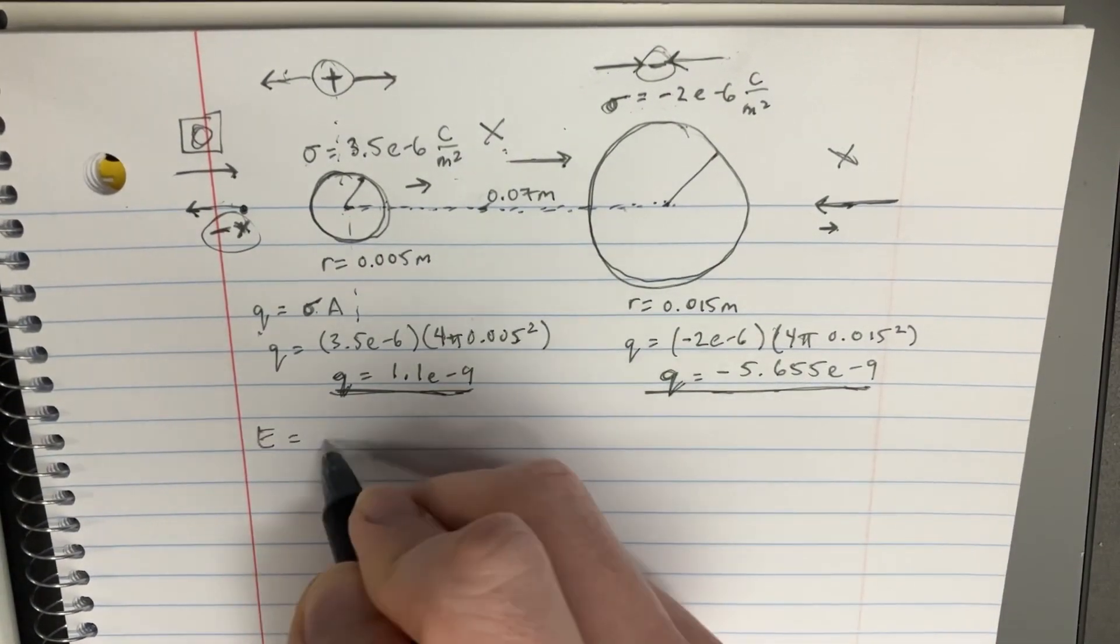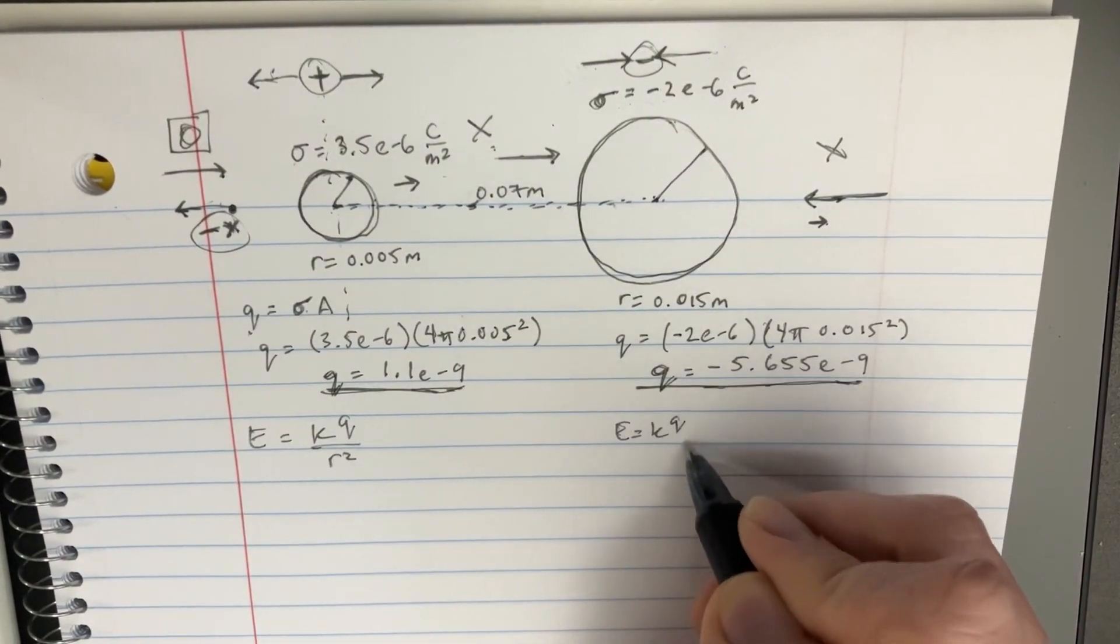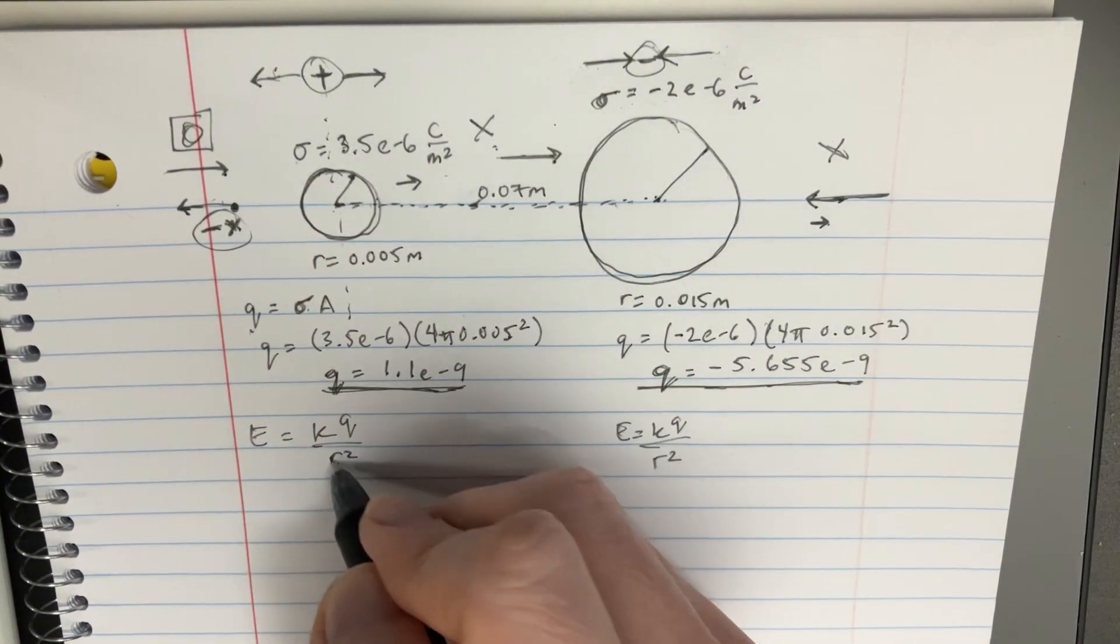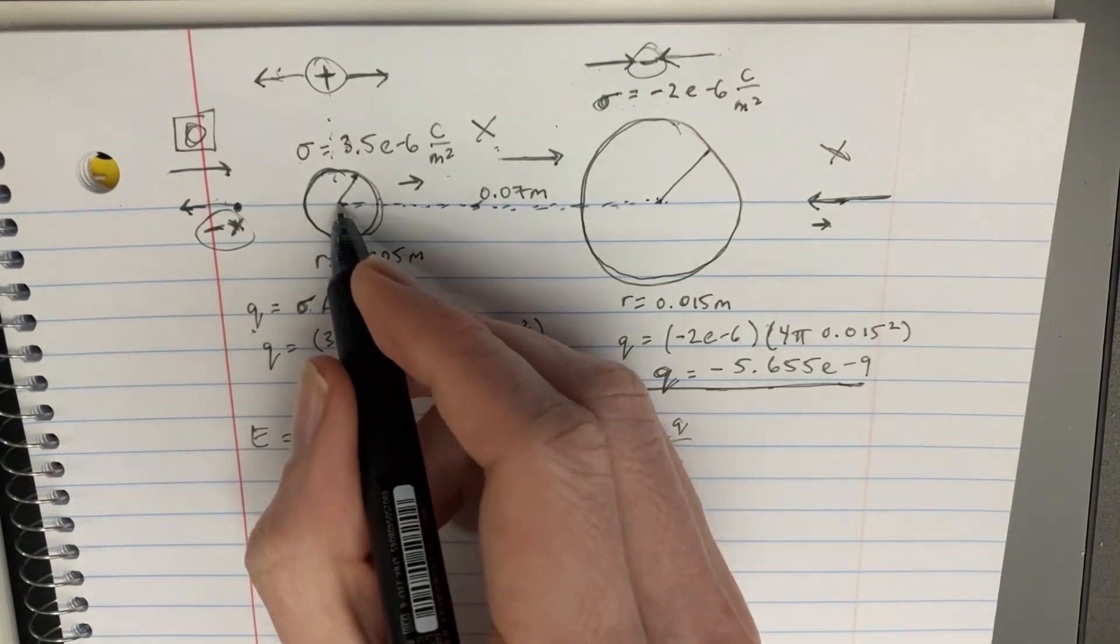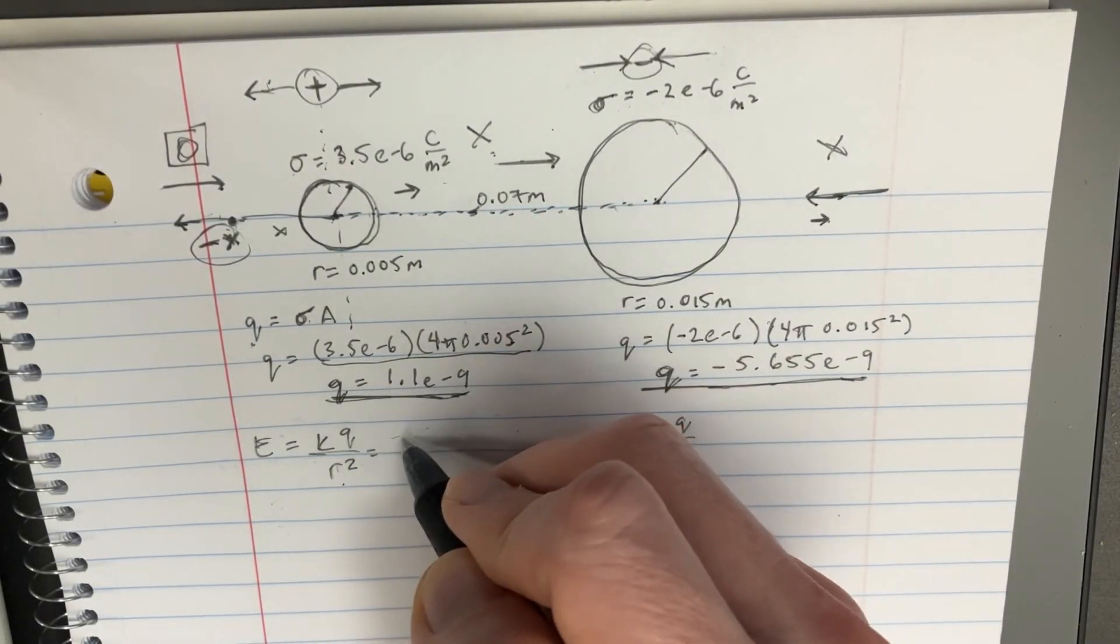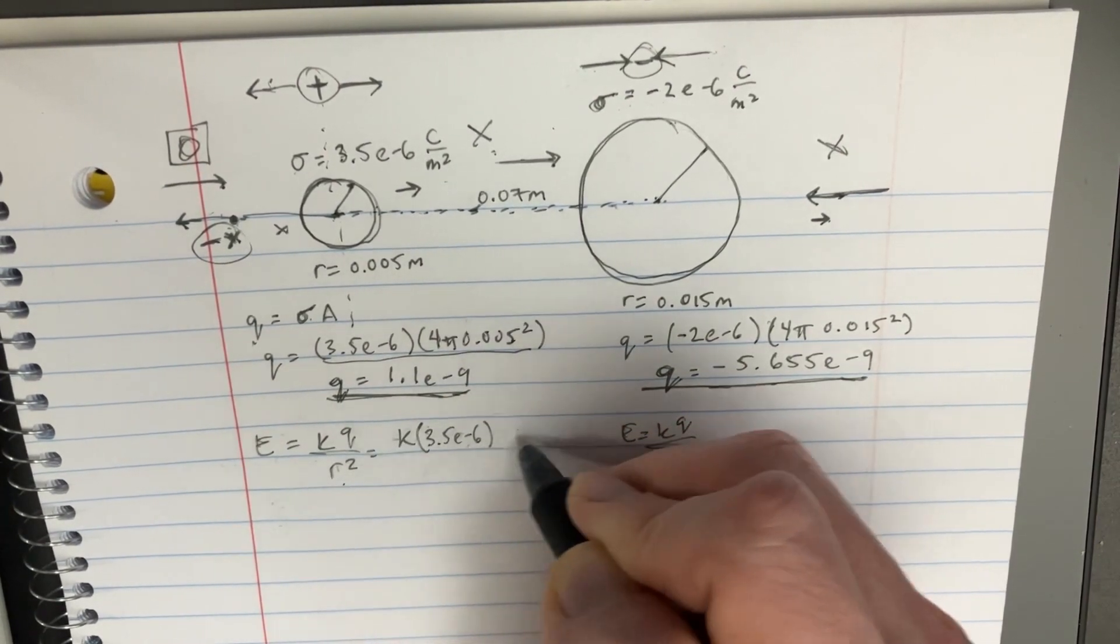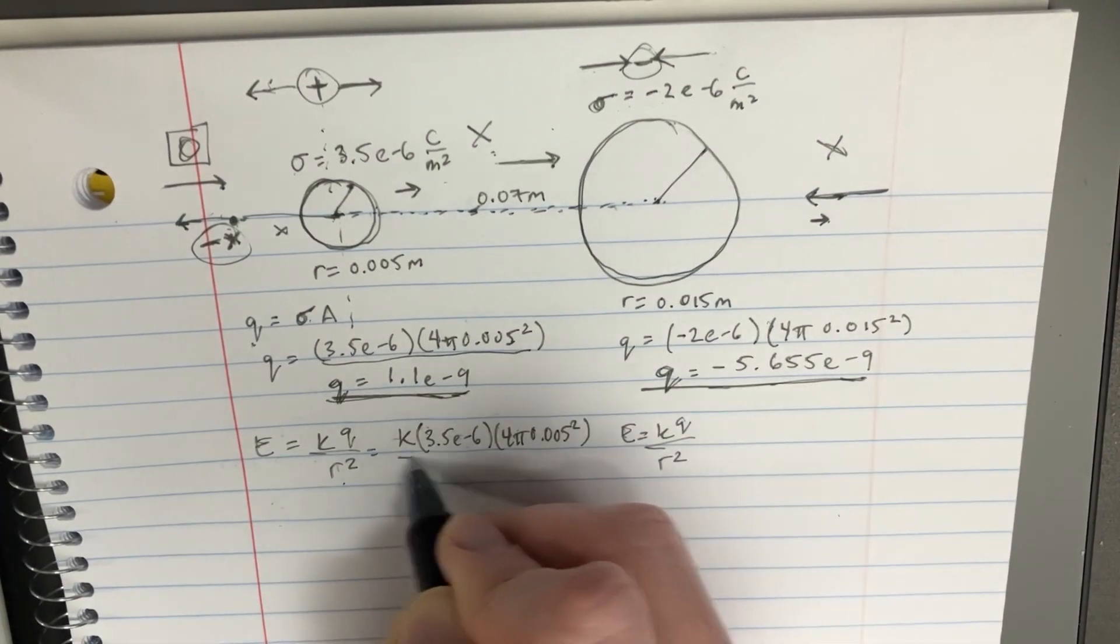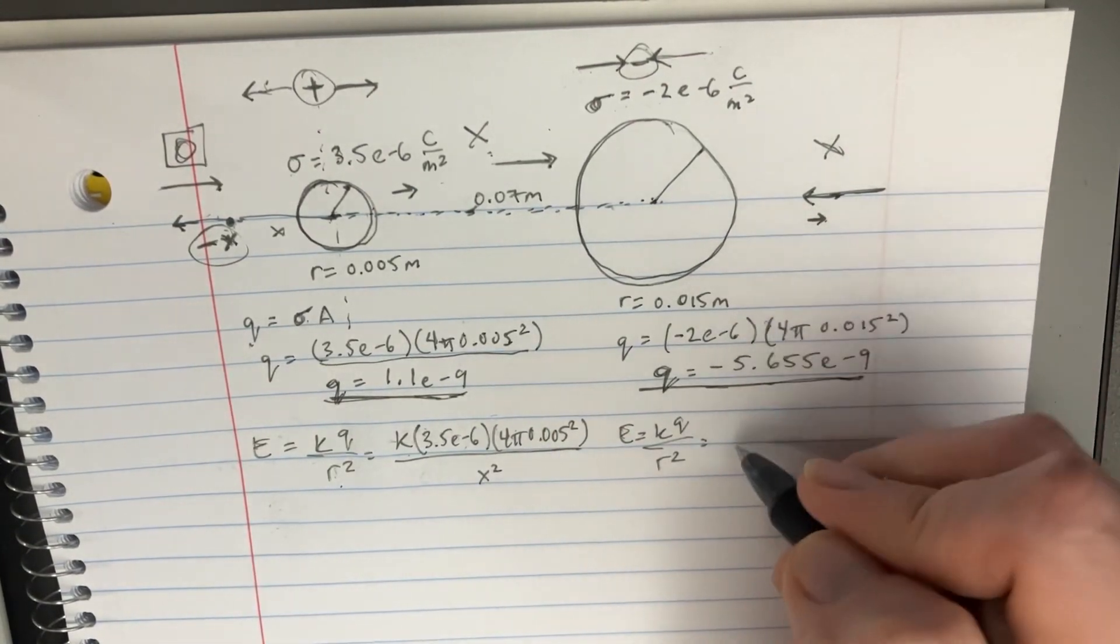Okay, great. So, now we can start returning to our equations for E. E is going to be equal to kq over r squared. This is true for both situations. However, this r squared is not the radius. It's actually the distance from here to the point to that. Let's plug in these values. We're going to have k, and then a 3.5 e to negative 6, now it's a 4 pi, and then this thing here. We'll divide that by, this is just going to be x squared.